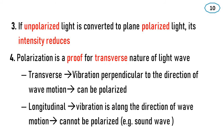Polarization is the proof for the transverse nature of light waves. A transverse wave means vibration is perpendicular to the direction of motion — that can be polarized. Longitudinal waves mean vibration is along the direction of motion — those cannot be polarized. An example of a longitudinal wave is a sound wave.